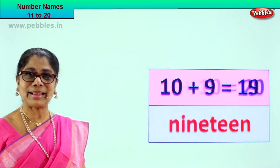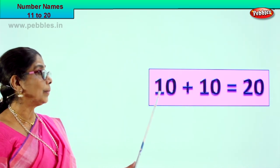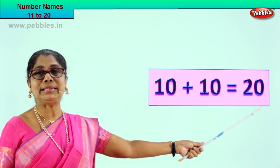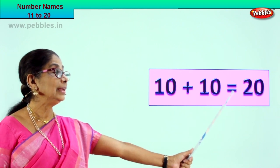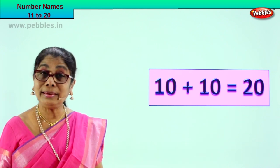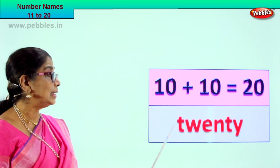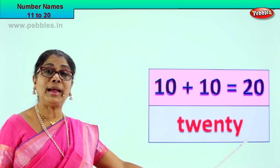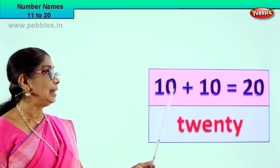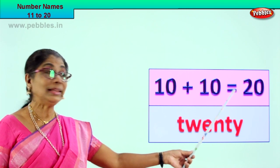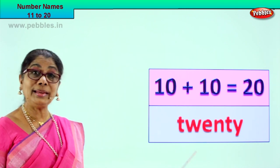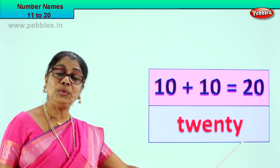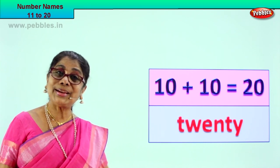Let's take the next exercise. Good! 10 plus 10 is equal to 20. How do we write 20 in words? T, W, E, N, T, Y. 20 in words. 10 plus 10 is equal to 20 — in words T, W, E, N, T, Y. 20 in words. Good!